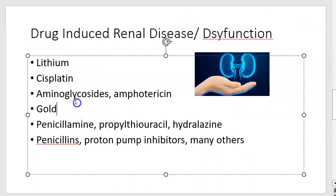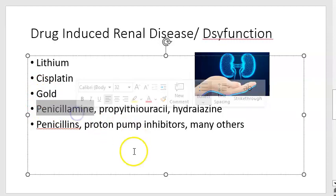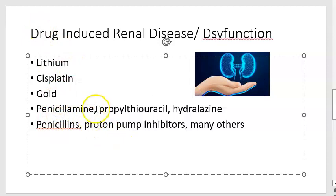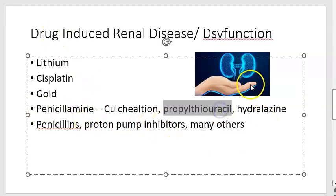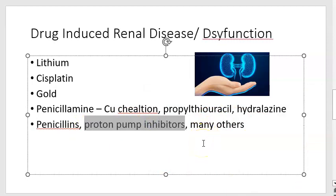Next are lithium, used for bipolar disorder; cisplatin, a cancer drug; gold, used for arthritis; penicillamine, a chelating agent for copper; propylthiouracil, an antithyroid drug that also harms the liver; hydralazine, used to treat high blood pressure; penicillin, a typical antibiotic; and proton pump inhibitors, used for reducing stomach acid in peptic ulcers, among many others.